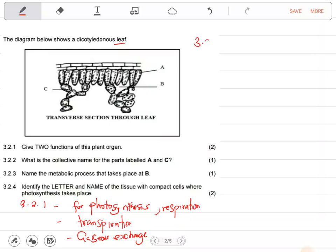Question 3.2.2: What is the collective name for the parts labeled A and C? The name given to A and C all together - that's what we call mesophyll tissue.